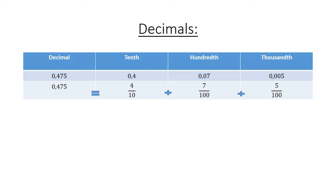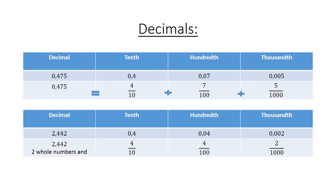Decimals: 0,475 is equal to 0,4 (4 over 10) plus 0,070 (7 over 100) plus 0,005 (5 over 1000). The next example: 2,442 means two whole numbers, plus 0,4 (4 over 10), the second digit 0,04 (4 over 100), and the last digit 0,002 (2 over 1000).